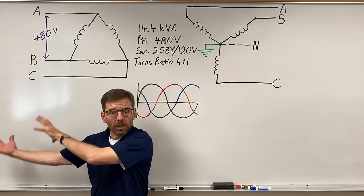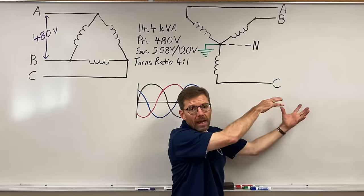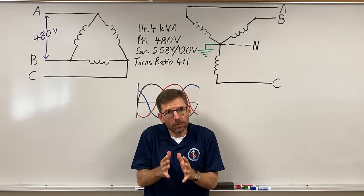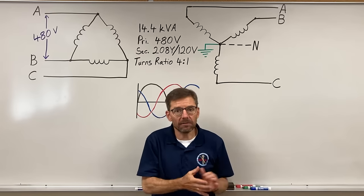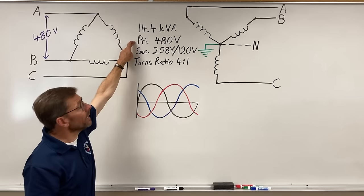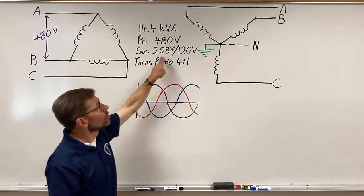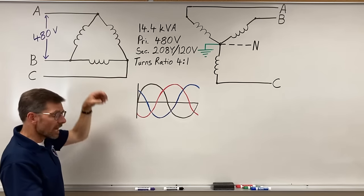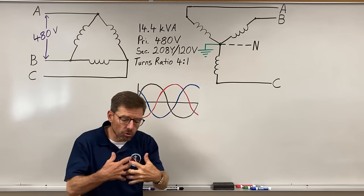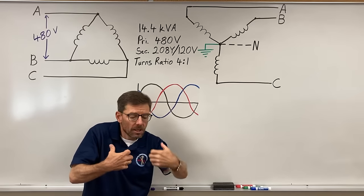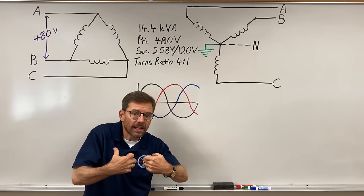Remember the power coming in should equal the power going out. We're ignoring the small losses of the transformer. They're generally very efficient. Primary voltage 480, secondary voltage 208/120. And this turns ratio. In this class we're focused on the turns ratio. The number of turns on the winding in the primary to the turns on the secondary winding.